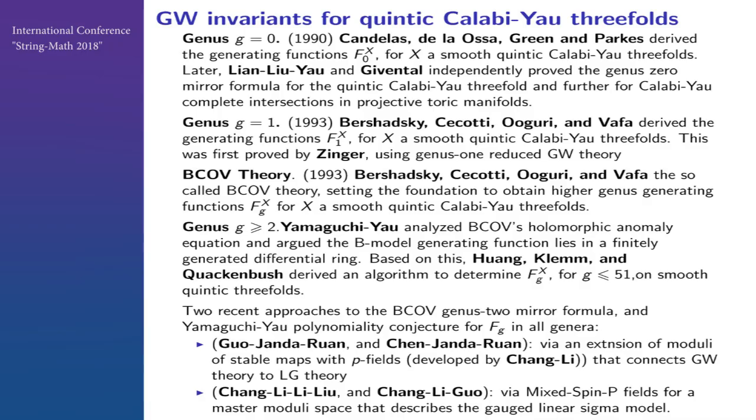Genus one was finally proved by Zinger using the work of Li and Tian. This paper is still as puzzling as ever, and it's very difficult to understand what to do with it, but still we're making progress. About 14 years ago, Yamaguchi from Japan came to work with me as a postdoc. We tried to understand this BCOV paper, and I decided it should be simplified and much more controllable.